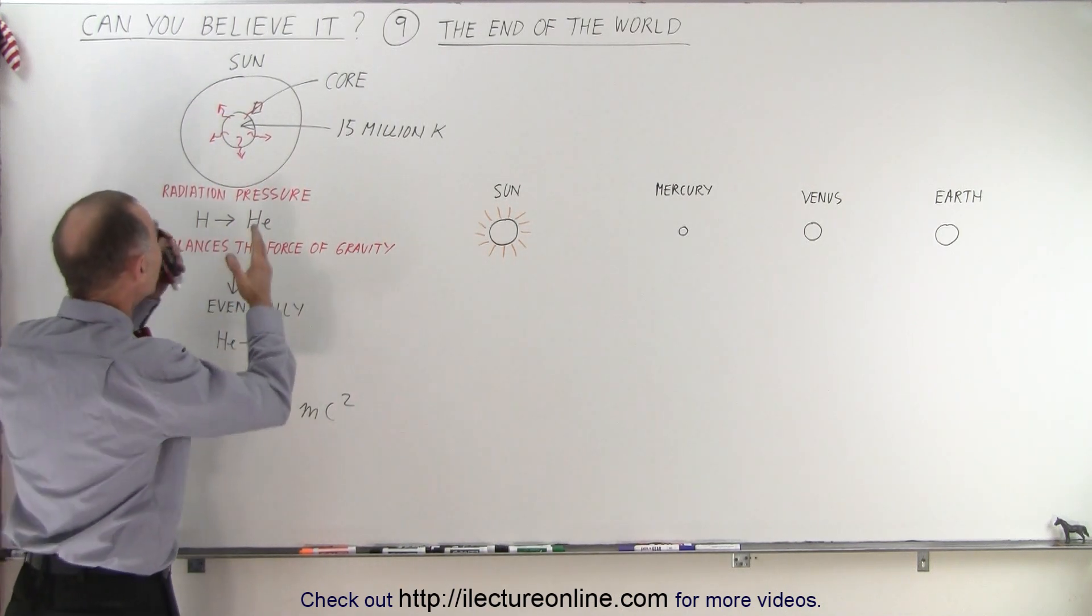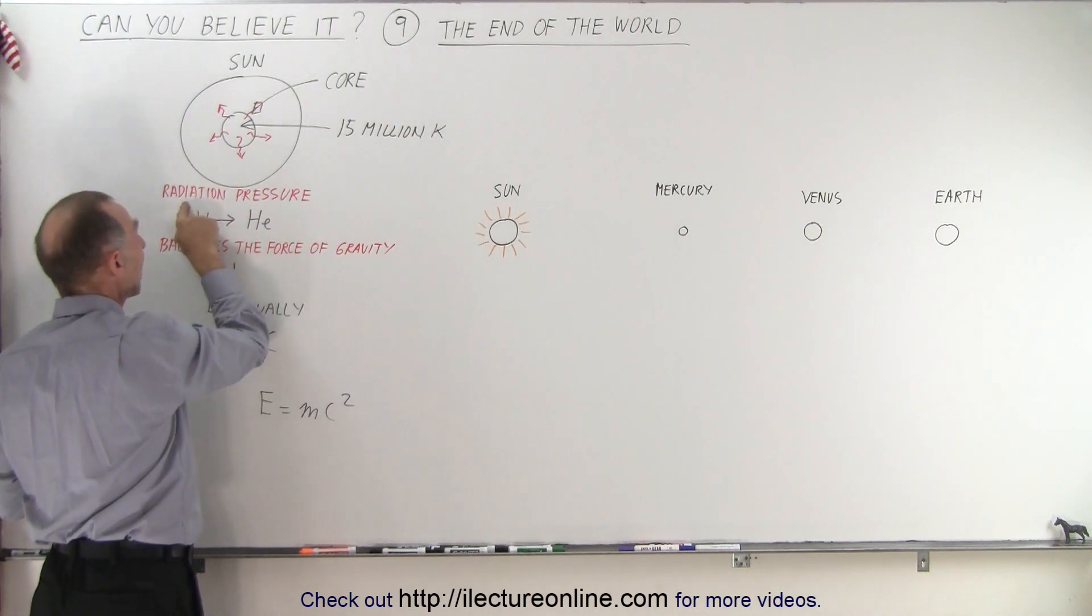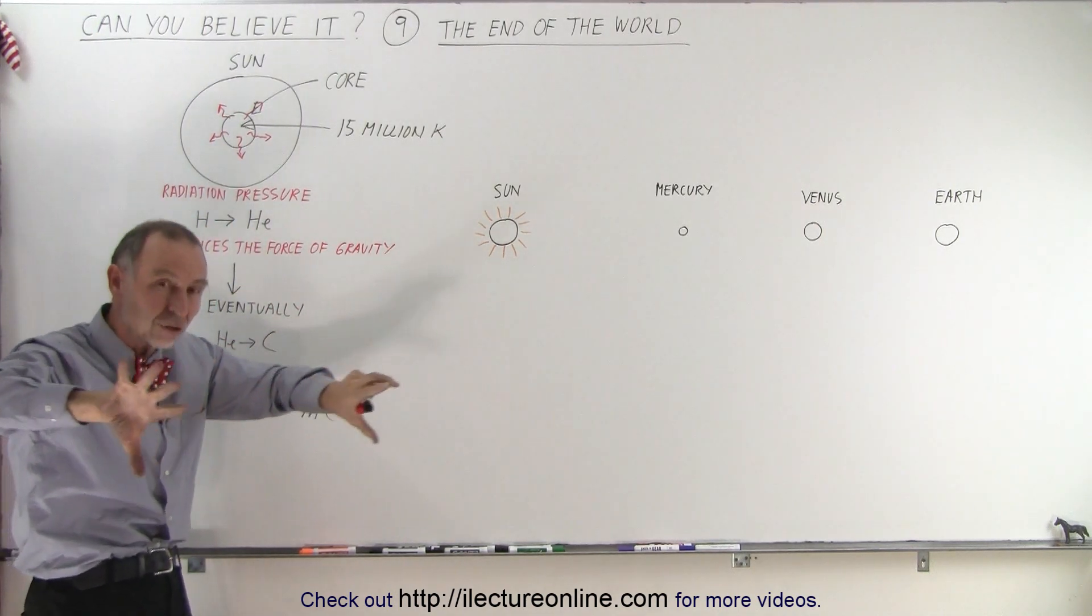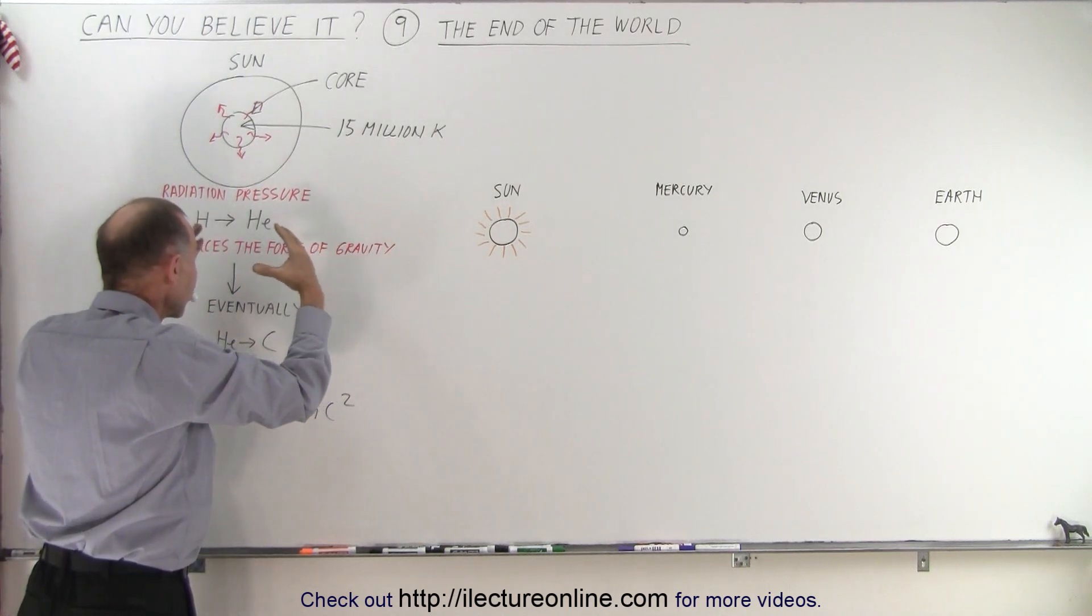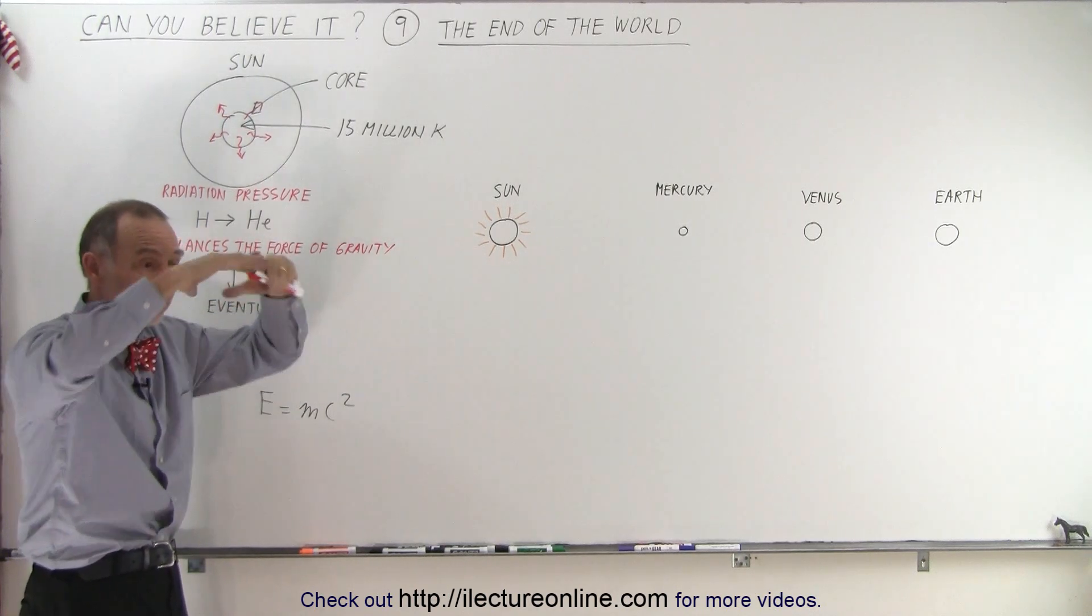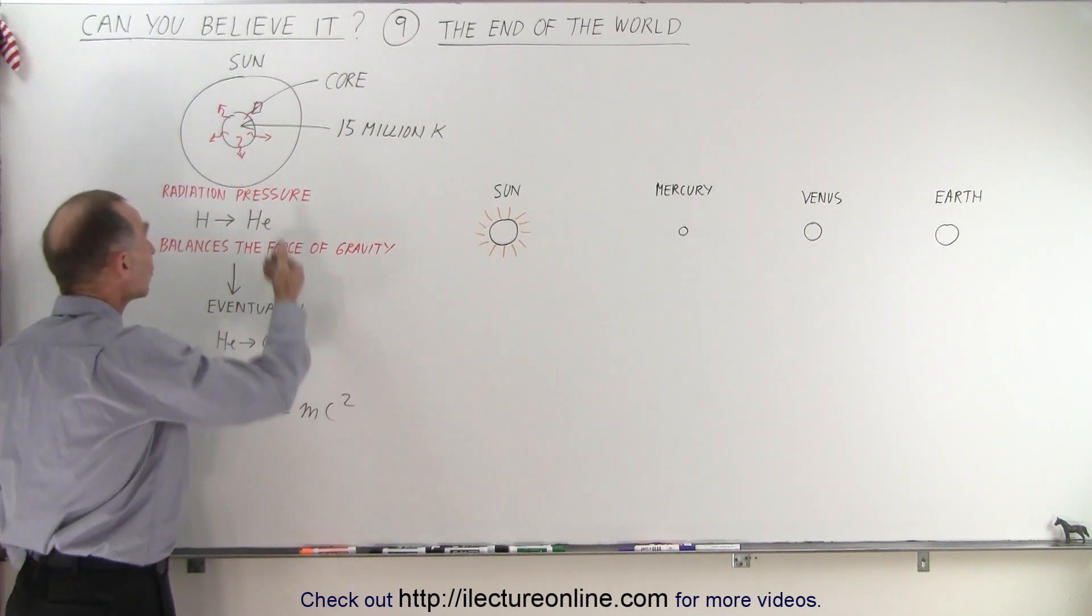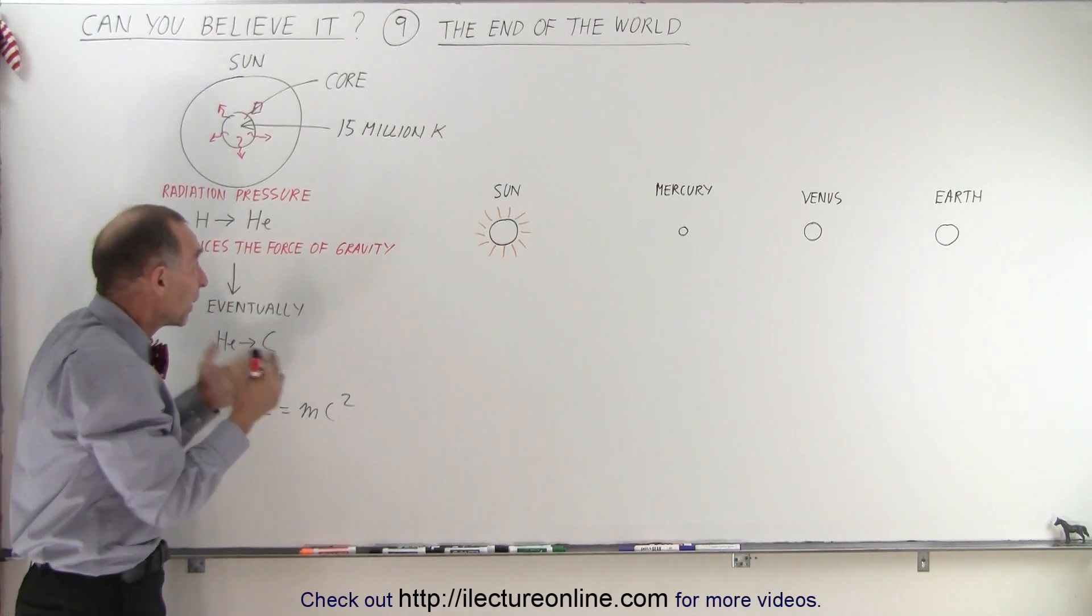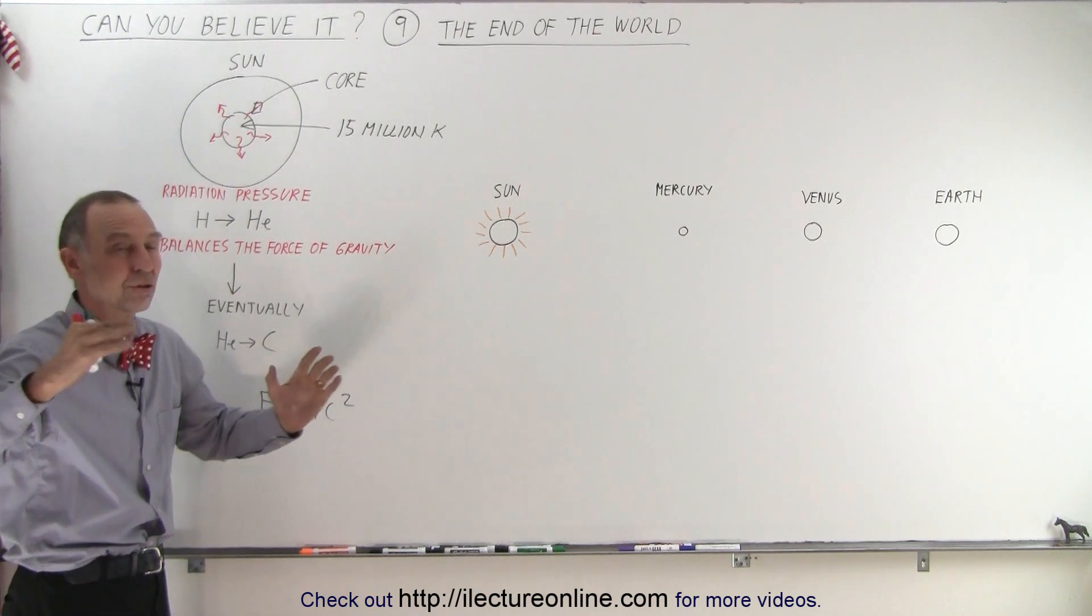And what that does is the energy that's being produced pushes against the forces of gravity. There's a balance between the radiation pressure, all that energy being produced pushing the sun outward, and enormous gravitational forces trying to push the sun inward. And at some point there's a balance between the two. And so therefore the sun has a particular size based upon that balance. So the radius of the sun is about 696,000 kilometers.